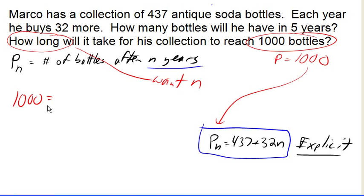There are two things that we typically do with equations or functions or models like this: either evaluate them, which is what we did when we found out how many bottles he would have in five years, or we solve them, which is what we're doing here, when we're trying to determine the input that would give me an output of 1,000.